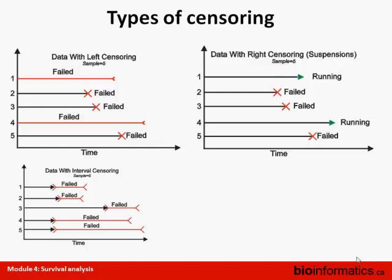Right censoring happens when, for instance, a patient drops out of the study. The patient was followed for a number of years for recurrence of the disease, and suddenly leaves the area and drops out of the study — we do not know when that patient will relapse. Interval censoring occurs when the event of interest can be estimated to happen within a certain time interval but not at the exact point in time. For example, a patient returns to the clinic showing obvious relapse, but we do not know exactly when it occurred — maybe a month ago, maybe half a year ago.